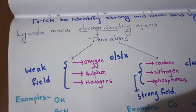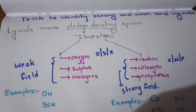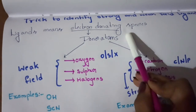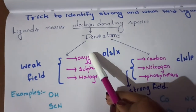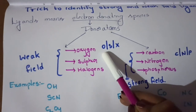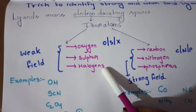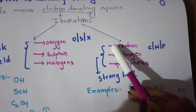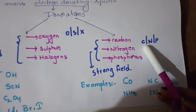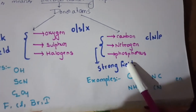So here is the trick: if the donor atom is Oxygen, Sulfur, or Halogen, it is a weak field ligand. If the donor atom is Carbon, Nitrogen, or Phosphorus, it is a strong field ligand. This is the simple trick.